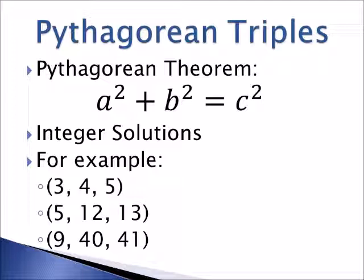In order to have a triple, the solutions or side lengths must all be integers. Some famous triples are the 3, 4, 5, the 5, 12, 13, and the 9, 40, 41.